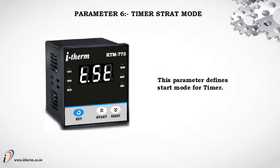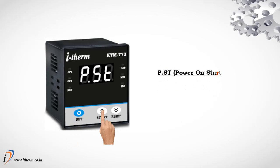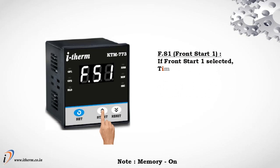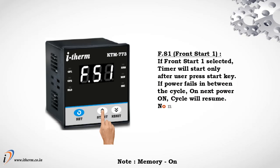Parameter 6: Timer Start Mode. This parameter defines the start mode for the timer. Power On Start: if selected, the timer will count from power on. Front Start 1: if selected, timer will start only after the user presses the start key. If power fails during the cycle, on next power on the cycle will resume — no need to apply the start command again.